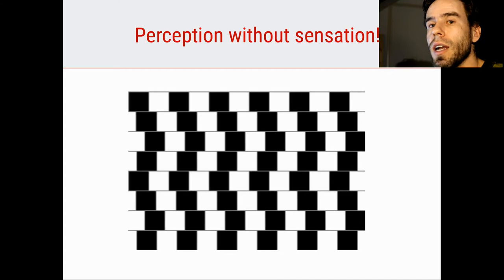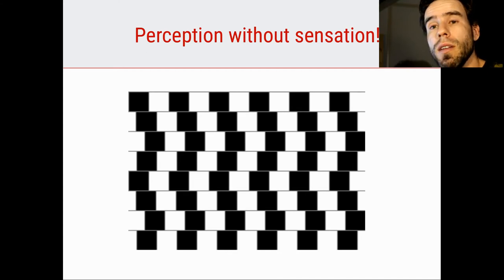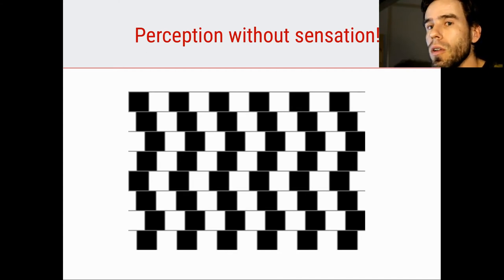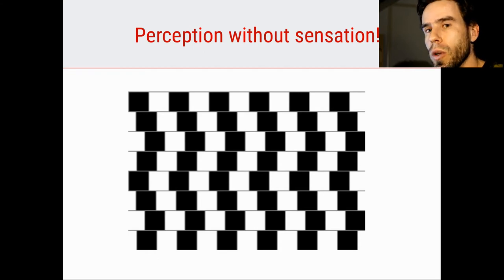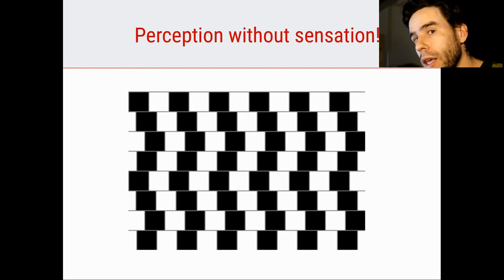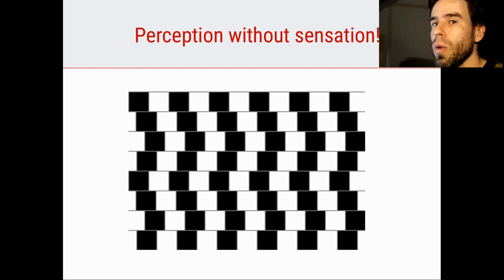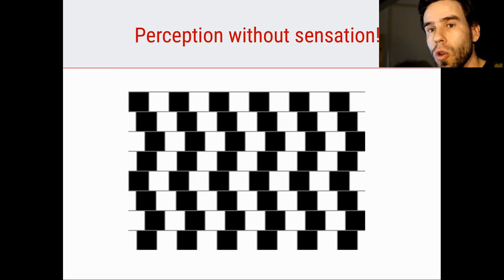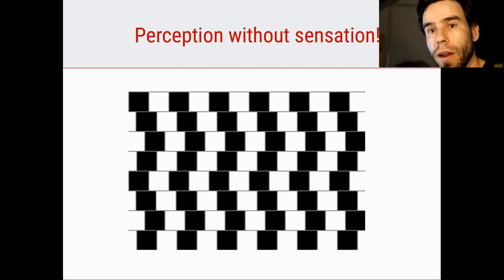In daily life, these kinds of disconnects don't often happen. Usually our perception corresponds pretty well to what is out there in the real world. But we can create situations — optical illusions — in which perception does not correspond to what is out there in the world.